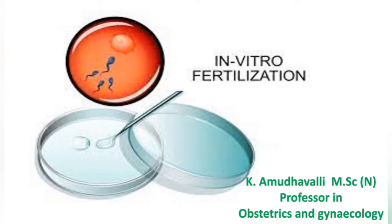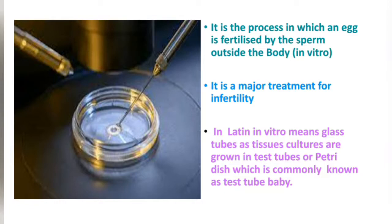Welcome back. As we have already discussed about the causes of infertility and about intrauterine insemination, which is one of the major procedures in the management of infertility, today let us see in vitro fertilization in detail. It is the process in which an egg is fertilized by the sperm outside the body — that is, in vitro. In Latin, 'in vitro' means glass tubes, as tissue cultures are grown in test tubes or petri dishes, which is commonly known as test tube baby.